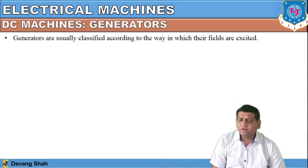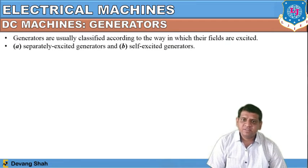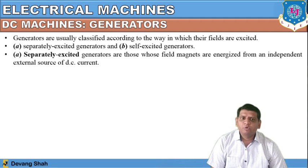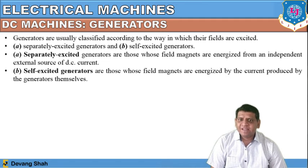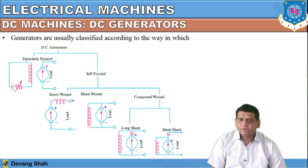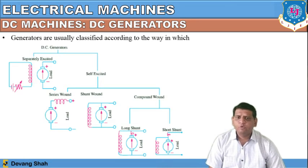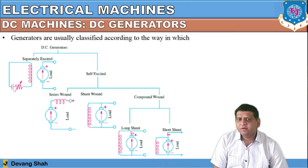These are the different parts of DC machines. Generators are classified according to the way their fields are excited, giving two types: separately excited generator and self-excited generator. A separately excited generator requires an external force or external DC source to energize its field magnet. In a self-excited generator, the field magnets are energized by the current produced by the generator itself. The self-excited DC generators are further classified into three forms: series, shunt, and compound.